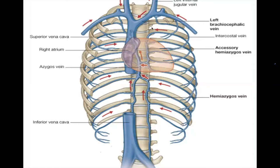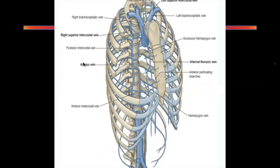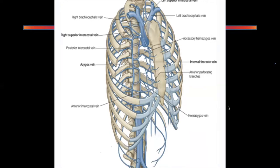There are many collaterals which, when the SVC is blocked, open up and dissipate the pressure. The important collaterals are: the azygous vein system, the intercostal veins which drain into the azygous and hemi-azygous arc system, the internal thoracic vein, and the abdominal epigastric veins — both superior and inferior — which show back-pressure changes when the SVC is compressed.